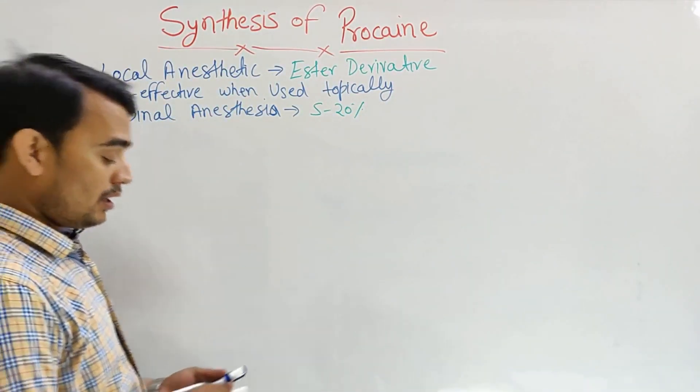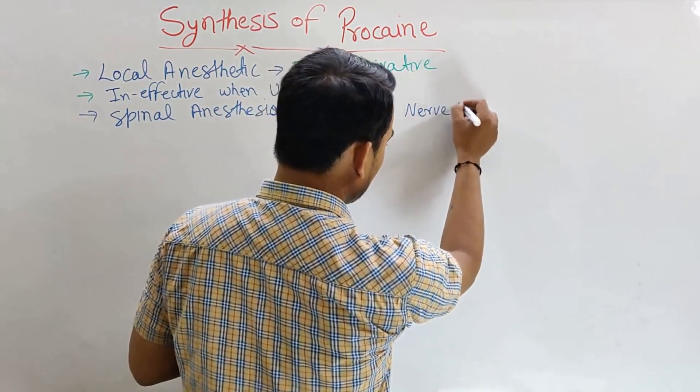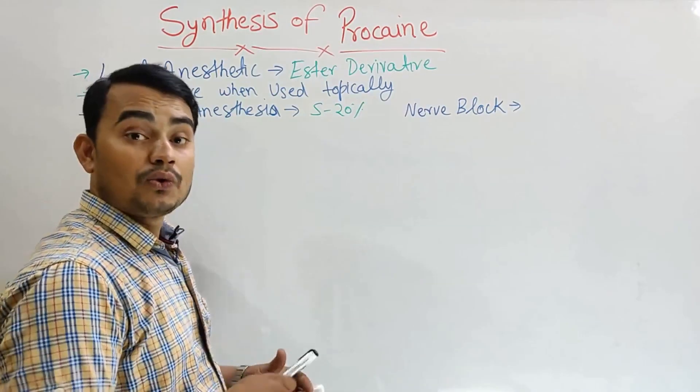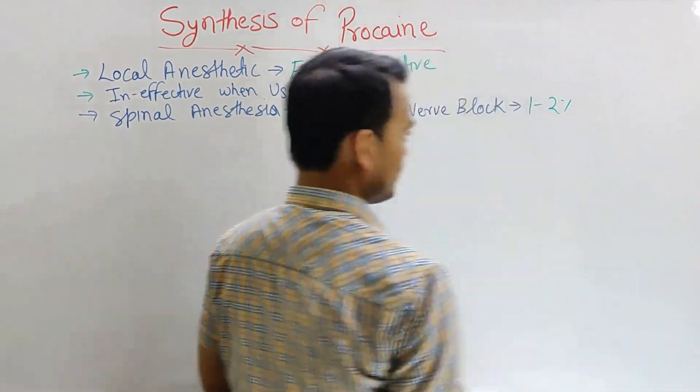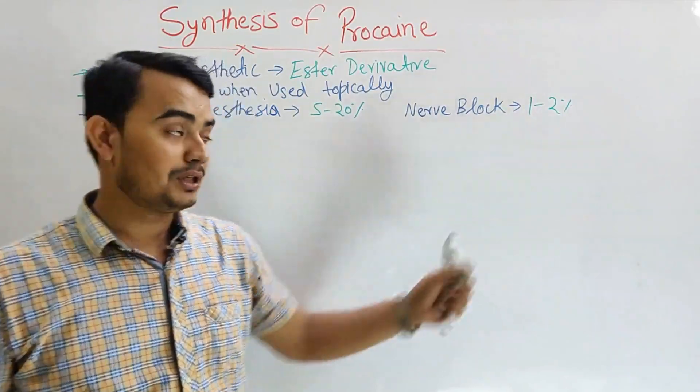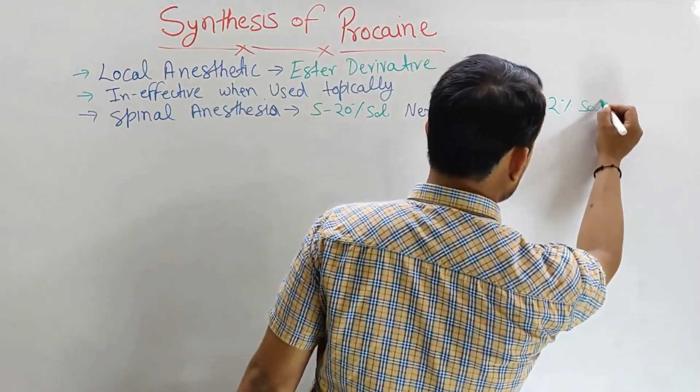When this procaine is used as nerve block, then its concentration will be 1 to 2%. So the very important rule here is concentration of the solution: 5 to 20% solution for spinal anesthesia, 1 to 2% solution for nerve block.